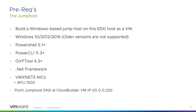We need PowerShell 5.1 and the PowerCLI module installed — that's the VMware plug-in for PowerShell, version 11.3 or greater. We need the OVF tool, which allows us to deploy the OVA file for the Cloud Builder appliance — that needs to be version 4.3 or newer, and it also needs to be the 64-bit installation, not the 32-bit. The pathing is very specific, so we're looking for the default installation path of the OVF tool.